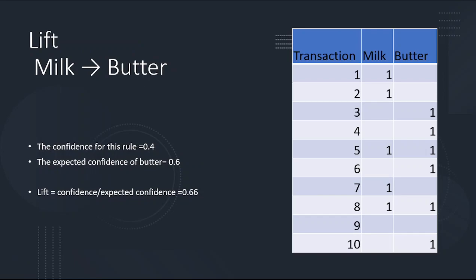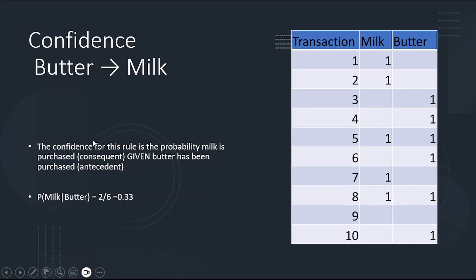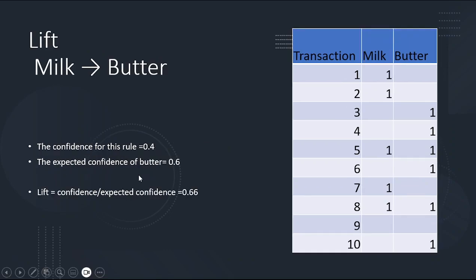Now let's look at the lift of milk to butter — how much are we increasing the probability of purchasing butter given that they purchased milk? The confidence is 0.4 for the milk-to-butter rule. The expected confidence of butter is just its support, 6 out of 10, which is 0.6. The lift is the ratio: 0.4 divided by 0.6 equals 0.66, which tells us that buying milk doesn't strongly elevate the probability of buying butter.